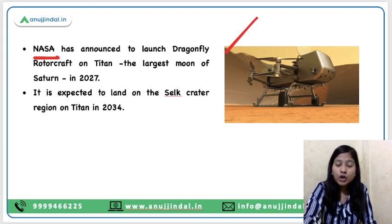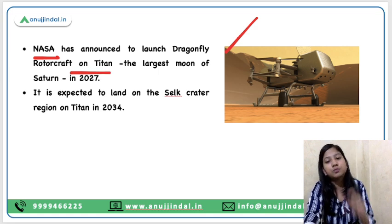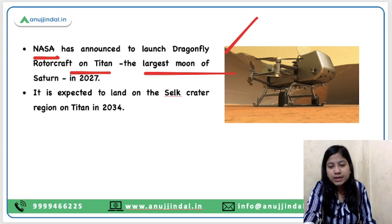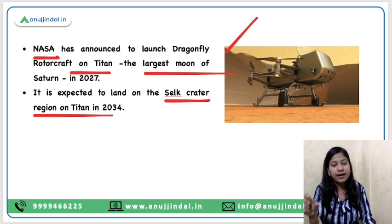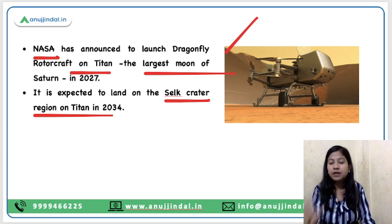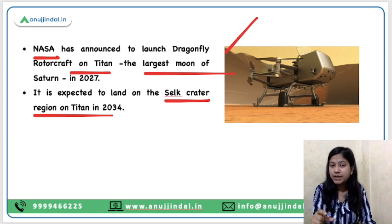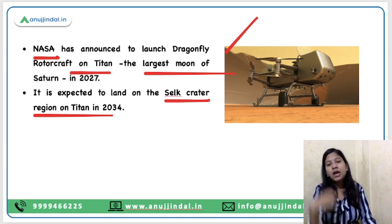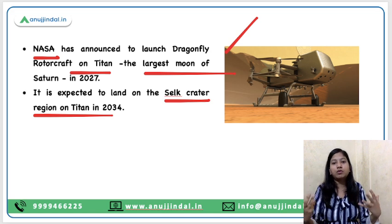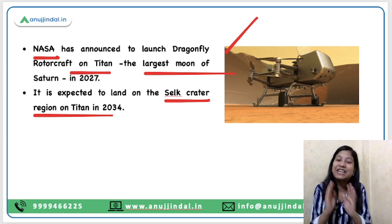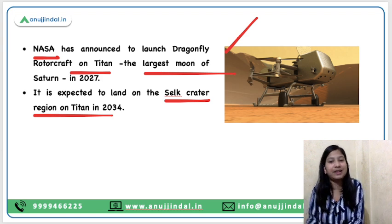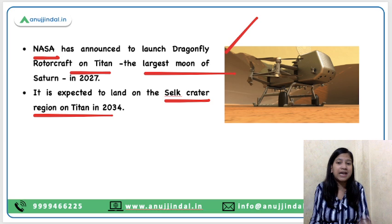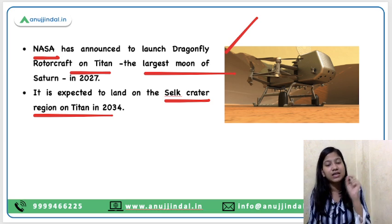It will land on the surface of Titan, which is the largest moon of Saturn. There is a specific place that researchers have identified for the landing — that is Selk Crater. Remember the name of this place; it could also be asked in exams. On which planet's moon is the Selk Crater region located? The answer is Titan, which is the largest moon of Saturn.